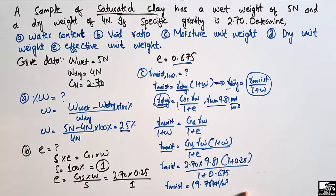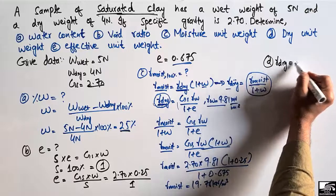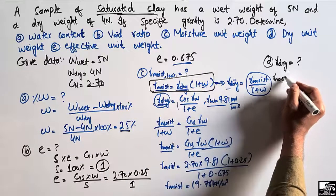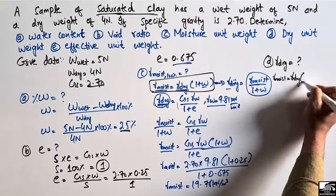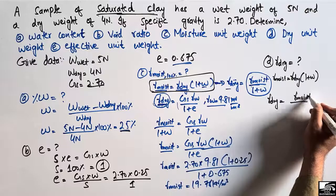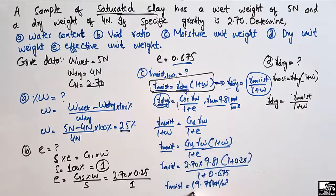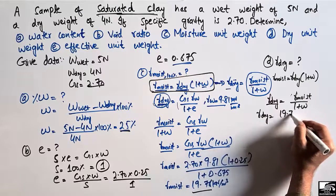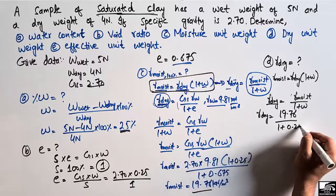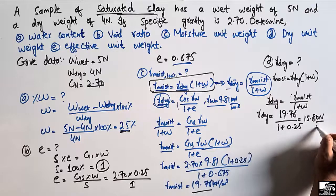Now to find the dry unit weight: since gamma moisture = gamma dry × (1 + W), we rearrange to get gamma dry = gamma moisture / (1 + W). Substituting gamma moisture = 19.76 kN/m³ and W = 0.25, we get gamma dry = 19.76 / 1.25 = 15.8 kN/m³. This is the dry unit weight for the soil sample.